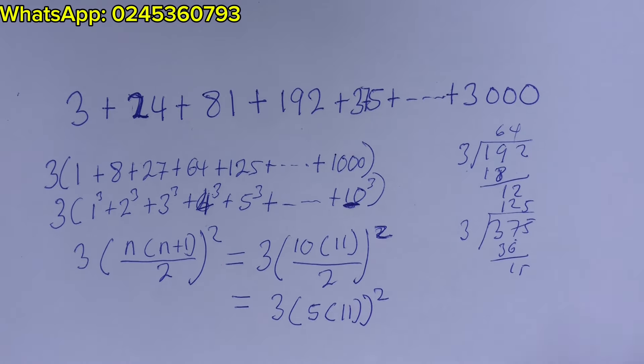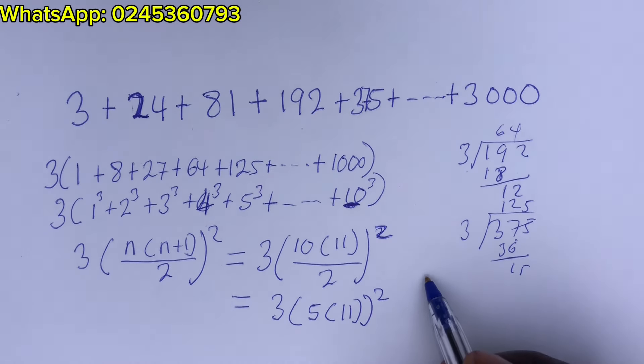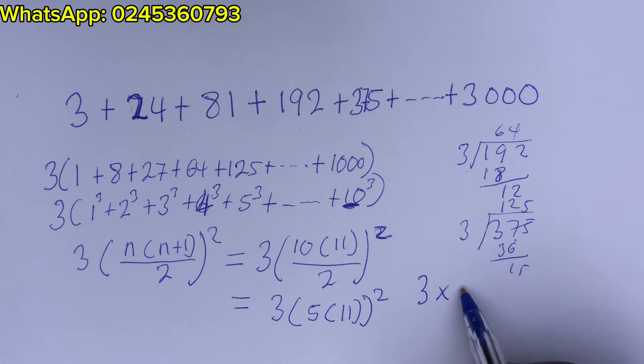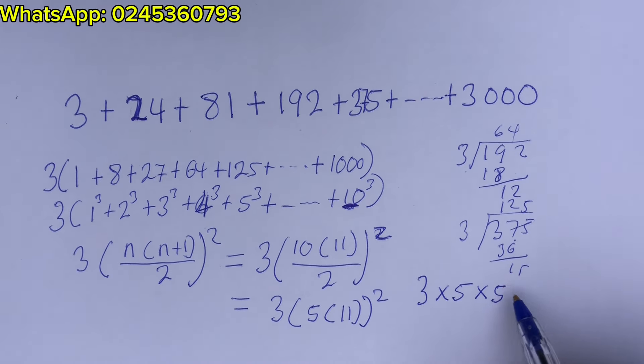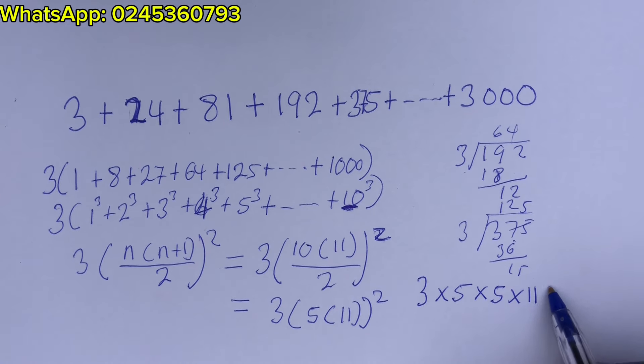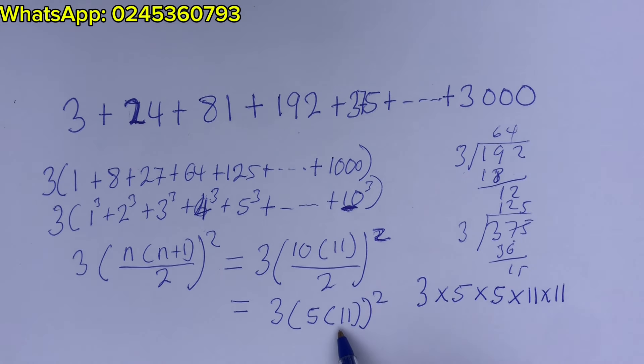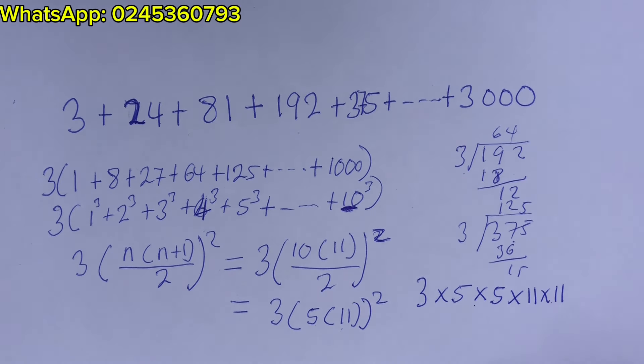So this is going to give us 3 times 5 times 5 times 11 times 11 because we have 11 squared. So 5 will multiply itself twice. 11 will multiply itself twice. Wow. And we are good to go.